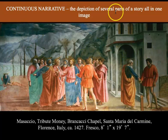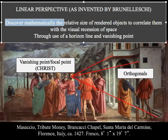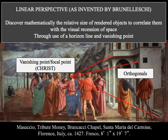Masaccio also has a great use of linear perspective — as invented by Brunelleschi — in which images are using linear perspective to discover mathematically the relative size of rendered objects to correlate them with the visual recession of space through the use of a horizon line and vanishing points. Christ is often the vanishing point or focal point of a work, and everything is measured from his face through the orthogonals.